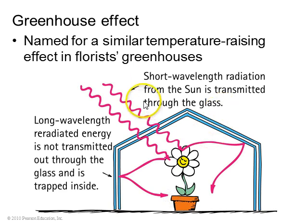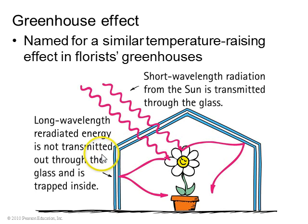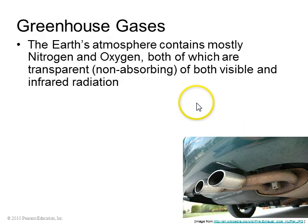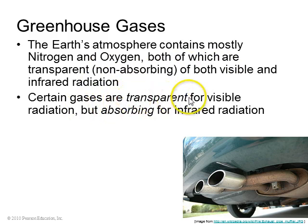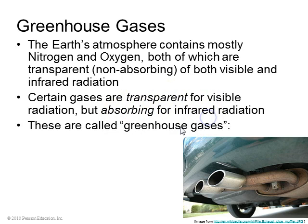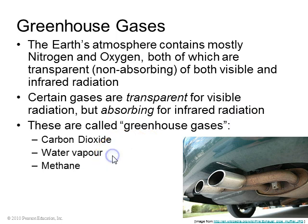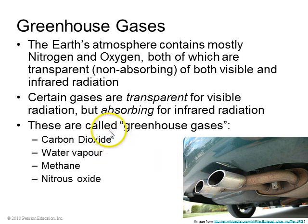The greenhouse effect: in an actual greenhouse where you keep flowers, short-wavelength radiation from the sun is transmitted through the glass, then absorbed by the flowers and re-emitted as infrared. Glass does not transmit infrared — it reflects it back in — and that's why the greenhouse warms up. There are also greenhouse gases. The air we breathe is mostly nitrogen and oxygen, which is transparent to both visible and infrared light. But certain gases — called greenhouse gases — are transparent to visible light yet absorbing for infrared radiation, acting like the glass of a greenhouse. Examples include carbon dioxide, water vapor, methane, and nitrous oxide. Many of these are produced by car exhaust, so pollution is a source of greenhouse gases.